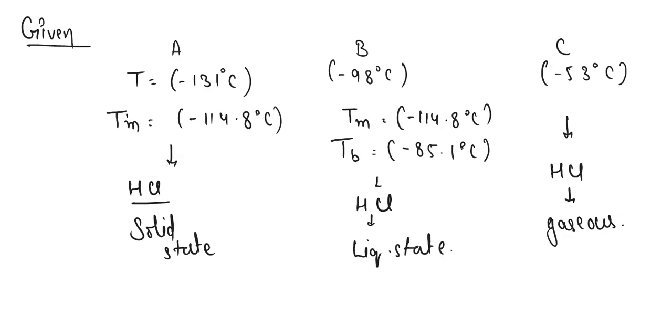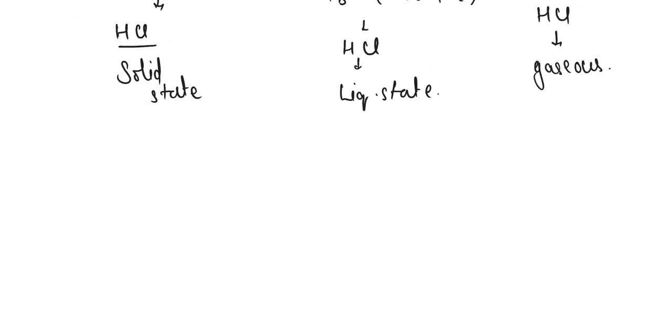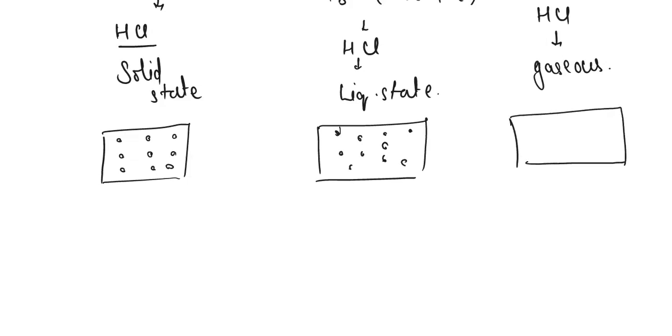We need to discuss the randomness in A, B, and C. In container A, molecules are arranged in a particular ordered manner. In container B, molecules are arranged more randomly because it's in liquid state.